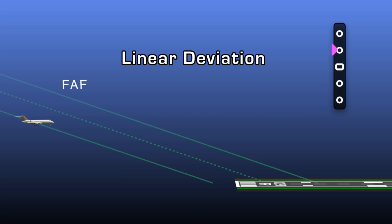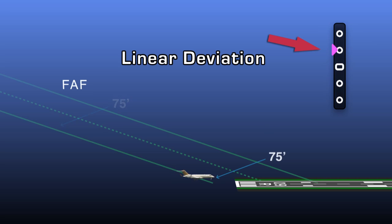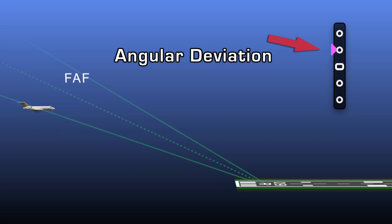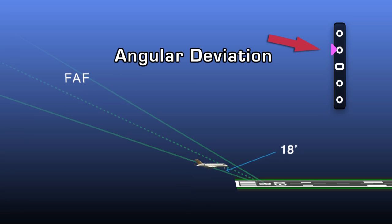To explain further: on an approach using linear deviation, a one-dot deviation can equal 75 feet at the final approach fix and 75 feet at the runway. Whereas on an approach using angular deviation, a one-dot deviation can be equal to approximately 180 feet at the final approach fix, but only 18 feet at minimums.